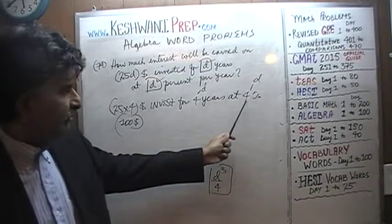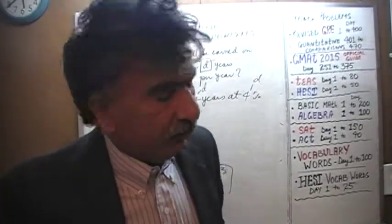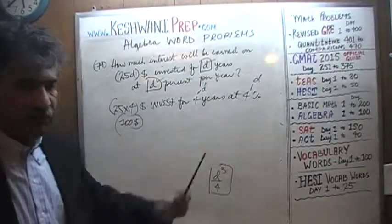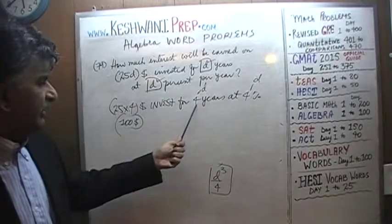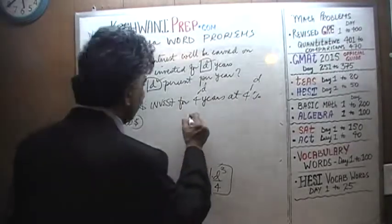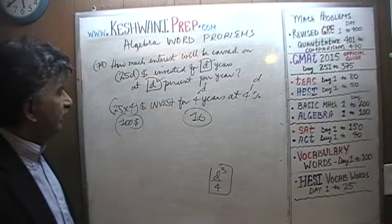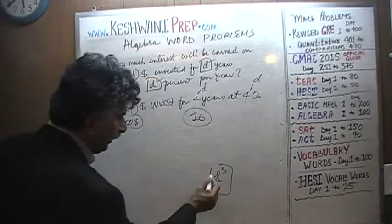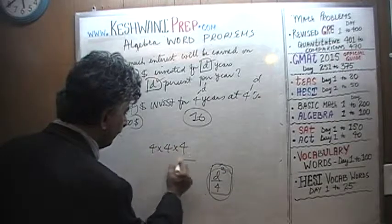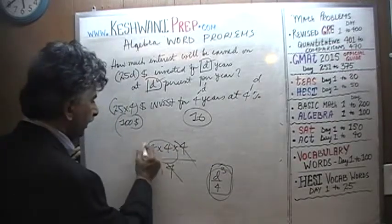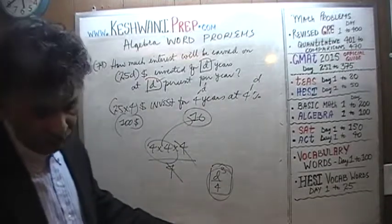$100 invested at 4 percent yields $4 in one year. We're not investing for 1 year — we're investing for 4 years, so we should get $16. Does D cubed over 4 give us 16 when D equals 4? Let's find out: 4 times 4 times 4 over 4 — what do you know, it does give us 16. It's the right answer.